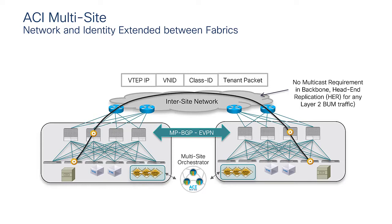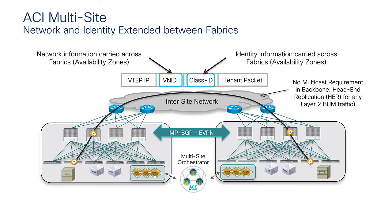What do we mean by namespace normalization? For every communication between endpoints in different sites, we establish a VXLAN tunnel that carries metadata information: VNID values identifying the VRF or bridge domain for the source endpoint, and the class ID identifying the specific endpoint group the source endpoint belongs to.